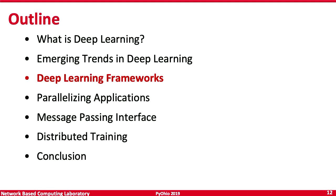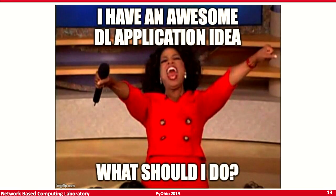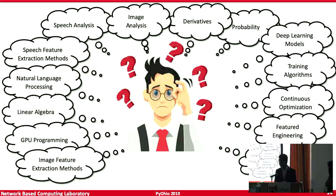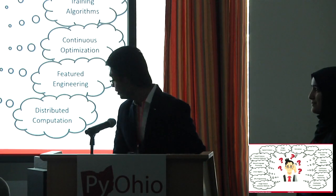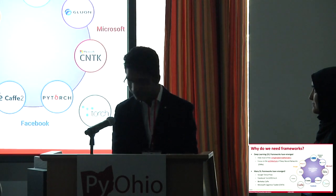If you have a deep learning application idea and want to implement it, you'd have to learn image analysis, derivatives, probability, training algorithms, and continuous optimization — as well as GPU programming and distributed computation. That's why we have deep learning frameworks. They hide most of the complicated mathematics so you can focus on the architecture of the DNN and your application without worrying about implementation details and performance.